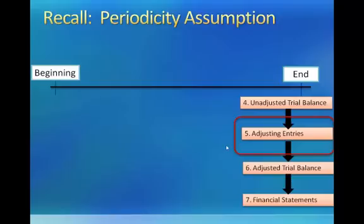The use of accrual accounting creates the need for adjusting entries, because rather than recording revenues when cash is received and expenses when cash is paid, we instead record revenues when the earnings process is complete and match the expenses that help generate those revenues in the same period. Thus, accrual accounting creates timing differences between the realization of cash receipts and the recognition of revenue as earned, as well as timing differences between the realization of cash payments and the recognition of an expense being incurred. Adjusting entries are performed to complete the accrual accounting process and help ensure that revenue and expense recognition occurs in the correct period.